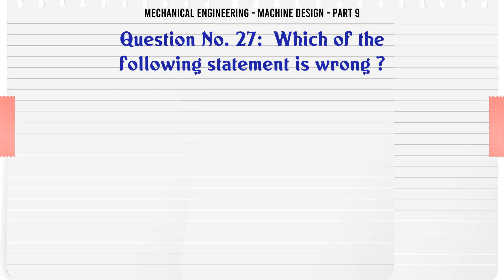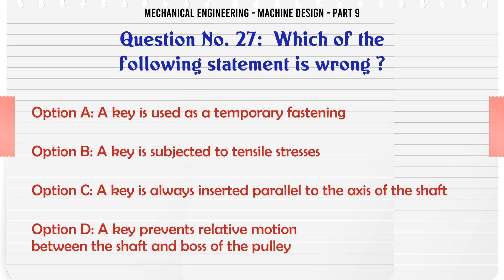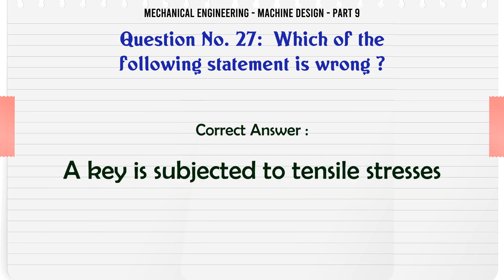Which of the following statement is wrong? A. A key is used as a temporary fastening, B. A key is subjected to tensile stresses, C. A key is always inserted parallel to the axis of the shaft, D. A key prevents relative motion between the shaft and boss of the shaft. The correct answer is A key is subjected to tensile stresses.